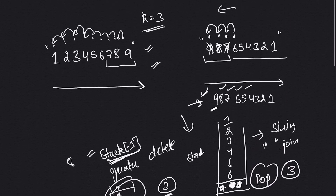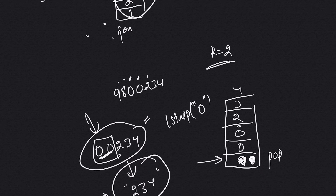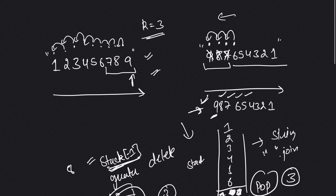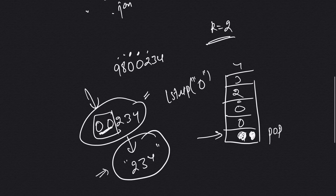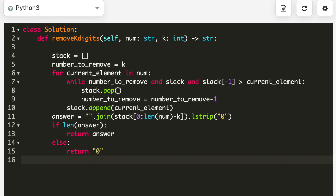The main edge cases are: it's possible we reach the end without having deleted any element — in that case we simply remove the last k elements from the number. If there are any leading zeros after removing k elements, we use lstrip to remove them. Let's move on to the coding part.